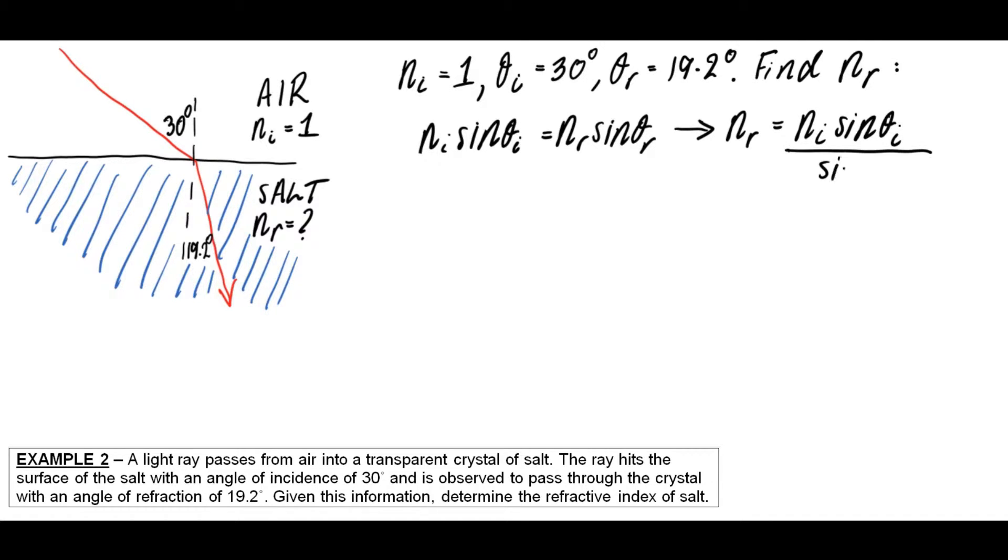So rearranging the equation, I end up with that expression for nr. I then plug in my numbers into that. Now remember when you're doing this, make sure that your calculator is set to degrees and not to radians by mistake. The way you can tell that is if there's a little d somewhere at the top of your calculator, you're in degrees. If there's a little r, you're in radians, and then you're in trouble. Having said that, most of the time it should be degrees. So I put in the numbers, I do the calculations on my calculator, and I end up with a final answer of 1.52 for the refractive index.